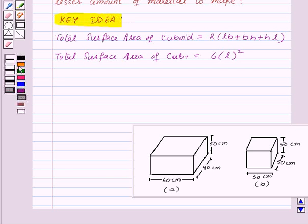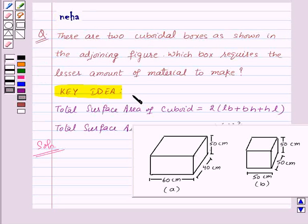Now let's see its solution. In this, we need to find the amount of material to make these two boxes. So for that, we will find the total surface area of both of these boxes.